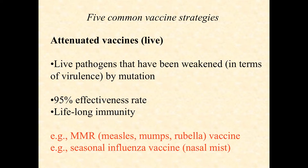Now there are trade-offs. The pluses are a huge effectiveness rate — something like 95% effectiveness — a very intense response, and great immunological memory. In many cases this brings lifelong immunity. With influenza, because it's an RNA virus that mutates very rapidly, you're not going to get lifelong immunity.